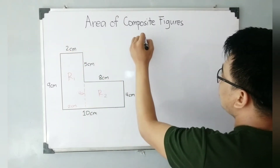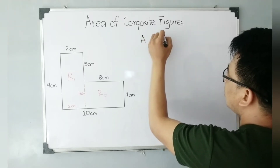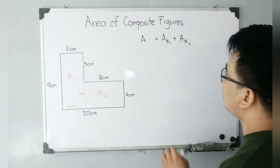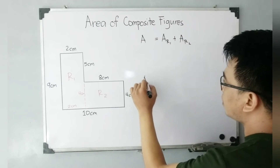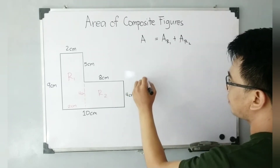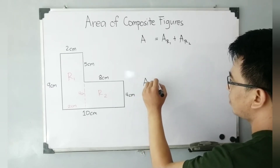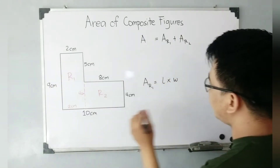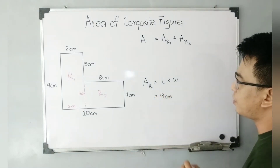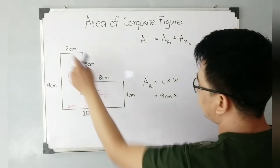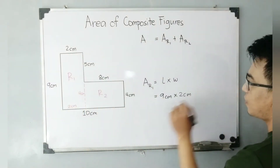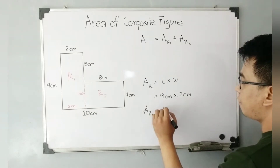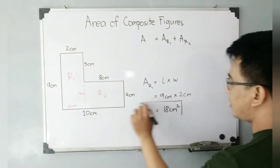Our formula is: the area of the whole composite figure is equal to the area of Rectangle Number One plus the area of Rectangle Number Two. So I need to find the area of Rectangle Number One first. The area is length times width — the length is nine centimeters and the width is two centimeters. Multiplying nine centimeters by two centimeters gives us 18 centimeters squared.